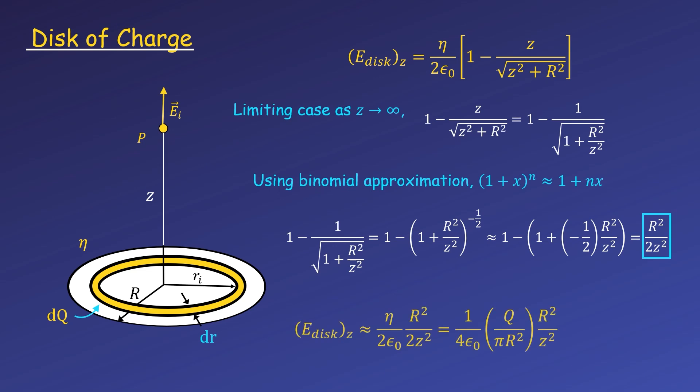Now putting this back into our equation for the field, and substituting Q over πR² for eta, we see the field reduces to that of a point charge, where the distance away is just the distance along the z axis. This is good, because if we zoom out from a disk of charge, it will appear to look smaller and smaller, eventually looking just like a point charge.